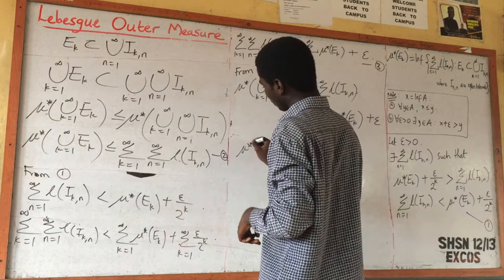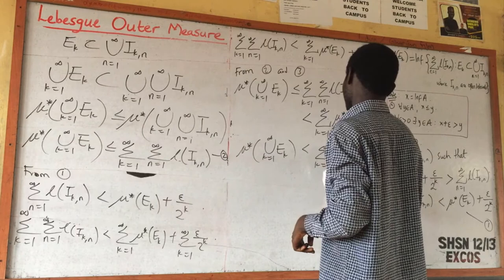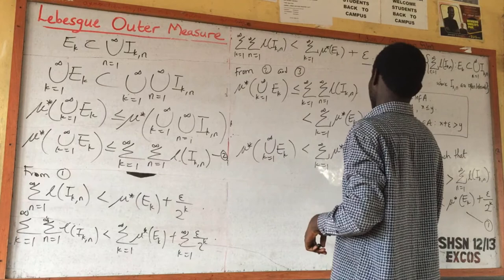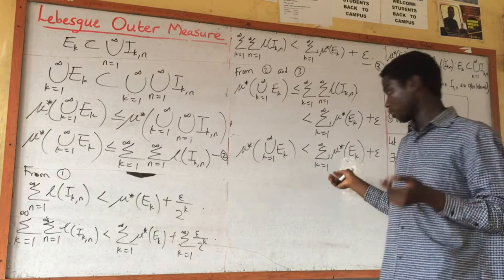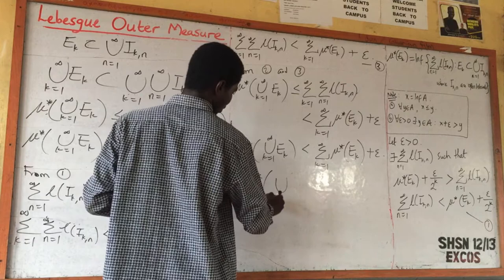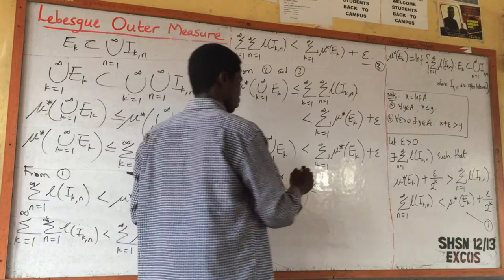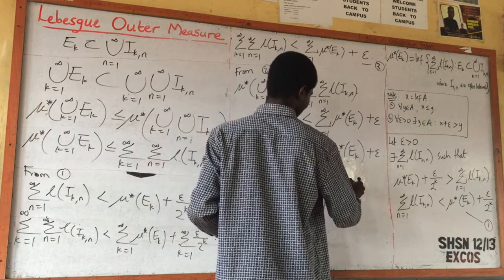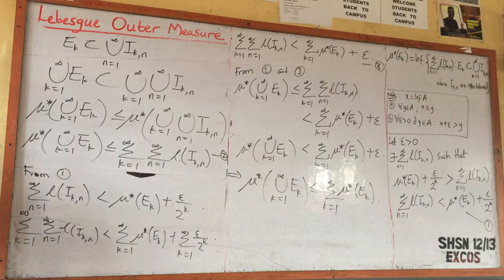Therefore, the outer measure of the union from k=1 to infinity of E_k is less than the summation from k=1 to infinity of the outer measure of E_k plus epsilon. Taking the infimum or removing epsilon, we conclude that the outer measure of the union is less than or equal to the summation of the outer measures. This completes the proof of countable sub-additivity.